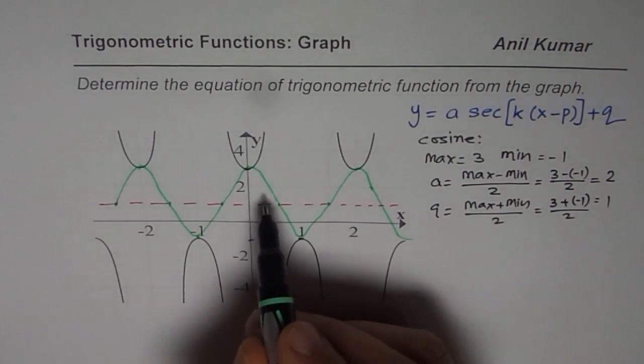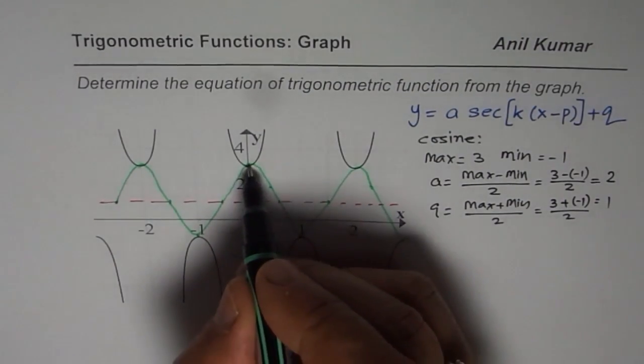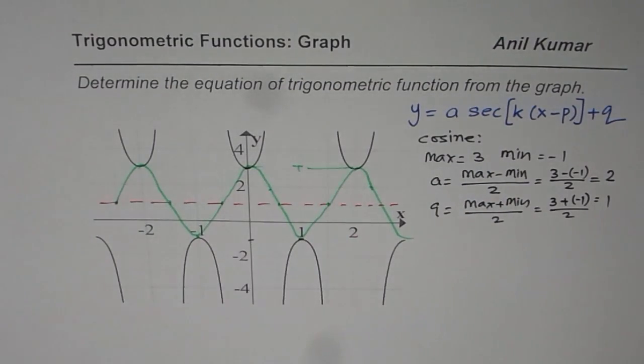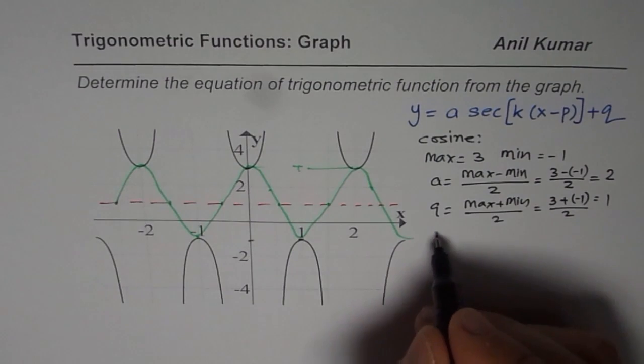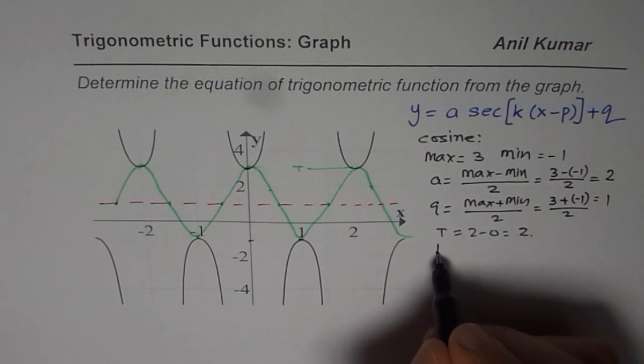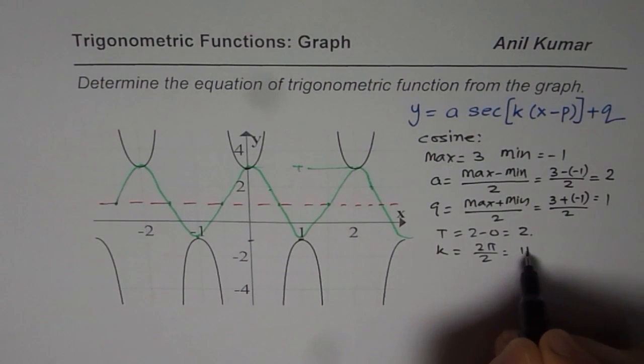So what we will do at present is figure out what this cosine function is. Now we can find the time period which is the time between these two peaks. So time period for us is equal to 2 minus 0 which is 2. From time period we can get k value which is 2π by 2 or it is π.